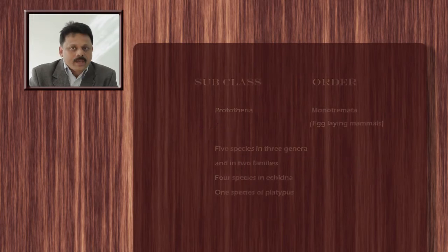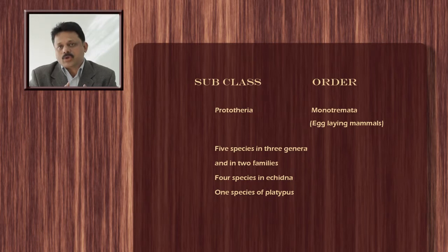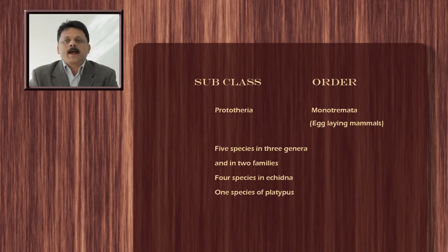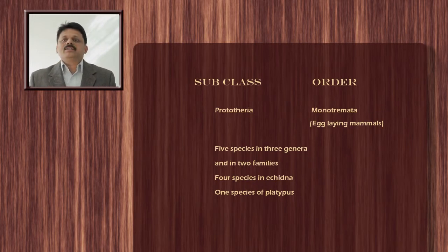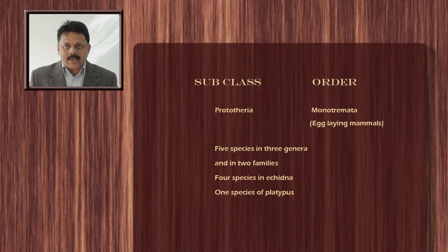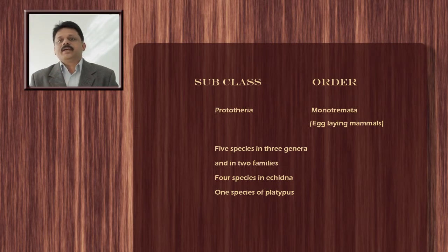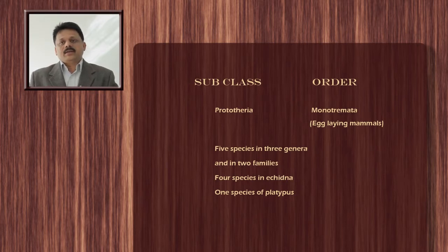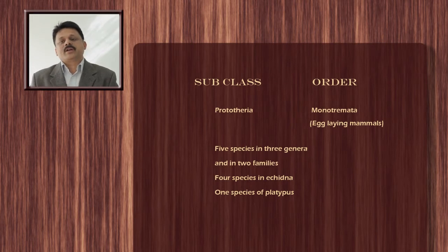First is subclass Prototheria. The Prototheria subclass has only one order under it, which is called order Monotremata. Monotremata includes a group of animals called egg-laying mammals. Monotremes are considered the most primitive of the mammals — they lay eggs and the young ones come out of the eggs. There are five species in three genera under order Monotremata, spread across two families.